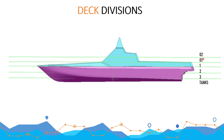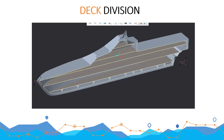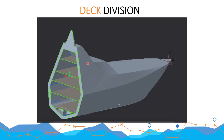The superstructure decks are denoted as 01, 02, 03, and so on. Here we have two decks in the superstructure and three decks in the hull, and tanks are present all along the keel. I have cut the ship from the centerline, and you can see the decks present along the ship — the tanks, deck 0, deck 3, deck 2, deck 1, deck 01, deck 02. Cutting the ship from the midship makes things easier to understand.